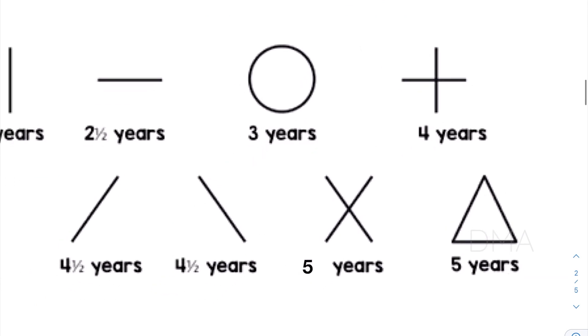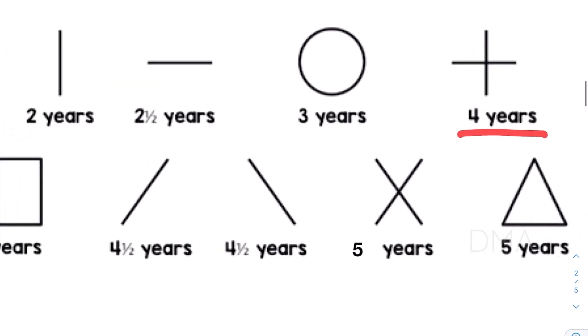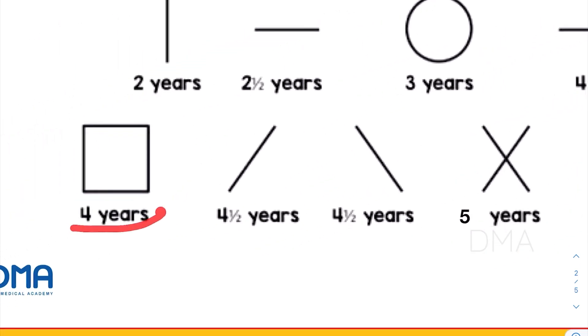At the age of four years, the baby is able to copy a plus sign or a cross sign. And also it is able to copy a rectangle or a square.